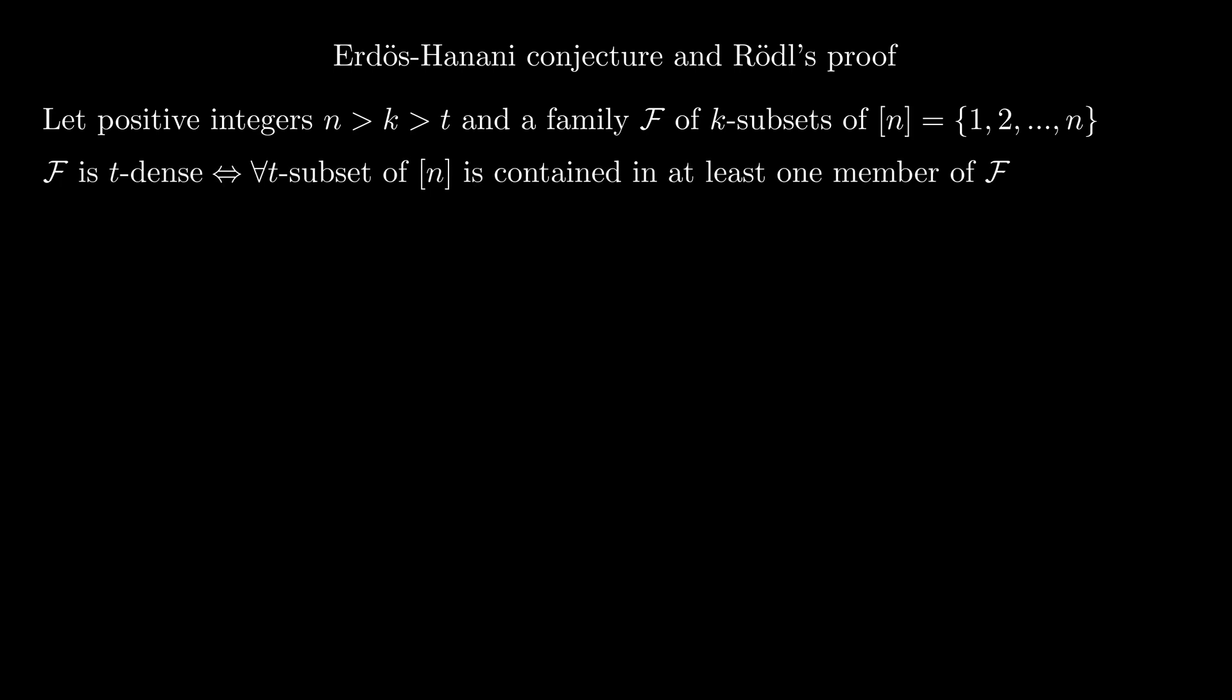One example of paramount importance is the Erdős-Hanani conjecture which was later proved by Rödl in 1985. Let positive integers t, k and n and the family f of k subsets of the set of the first n positive integers be given. We say that f is t dense if any t subset of the set is contained in at least one member of f. On the other hand, we say that f is t sparse if any two members of f intersect in less than t elements. Thus, every t subset of the set is contained in at most one member of f.